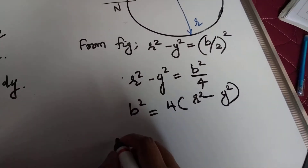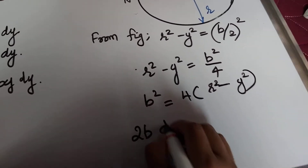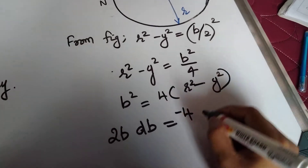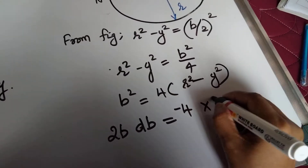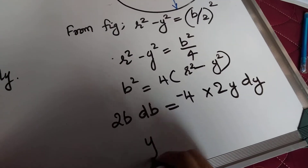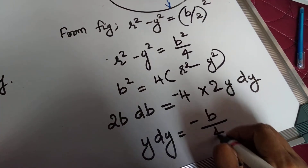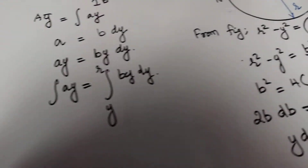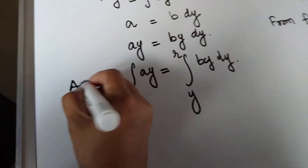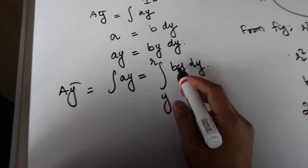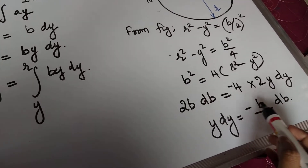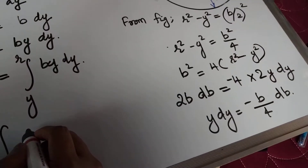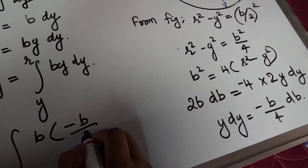Differentiating both sides: 2b·db = 4·(-2y)·dy, which gives y·dy = -b/4·db. Substituting into the integral, A·ȳ = integral from y to r of b·y·dy, and replacing y·dy with -b/4·db, we get the integral of b·(-b/4)·db.